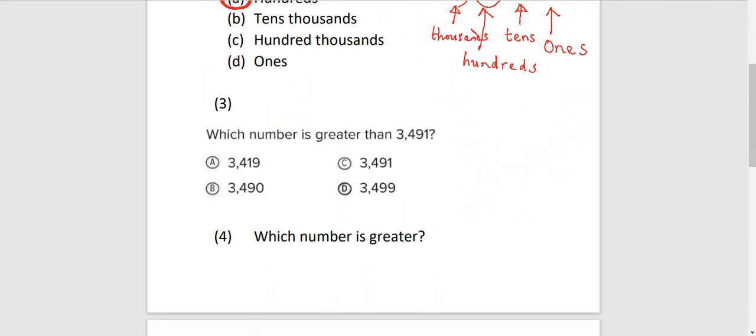Let's look at question number 3. It says, which number is greater than 3,491? Which number is greater? That is, is bigger. Bigger than this number. Let's see each of the answers. The number we have is 3,491. Let's see option A.